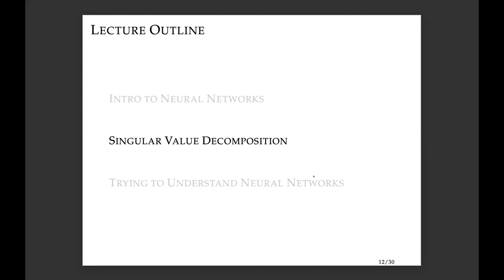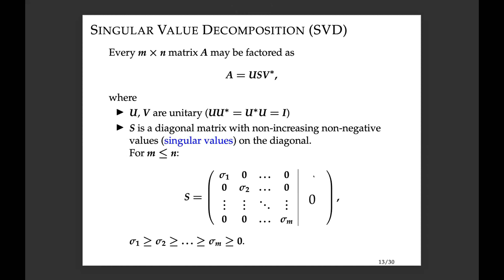Now a detour on the singular value decomposition, which will also set up one of the methods I'll present later. For any matrix A, we can factor it as a product U S V*, where U and V are unitary and S is a diagonal matrix with the same dimensions as A. Along the diagonal are non-negative, non-increasing values called singular values — analogous to an eigenvalue decomposition but applicable to any matrix.